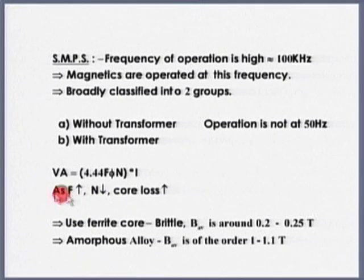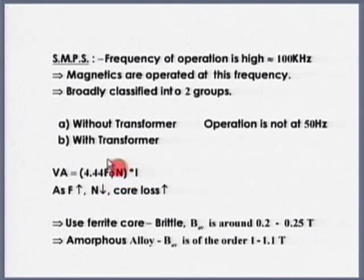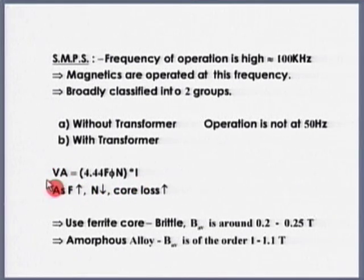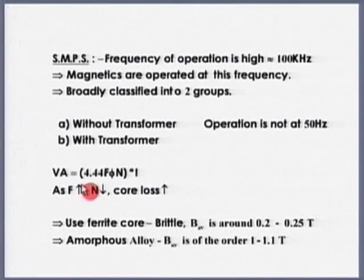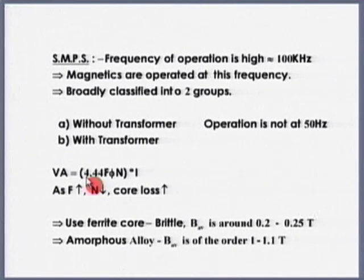If the VA rating of the transformer is given by 4.44 × F × φ × N — this is nothing but the voltage induced in the coil into the current — then for the same VA rating, the number of turns reduces as the frequency increases. So as the frequency increases, N comes down.